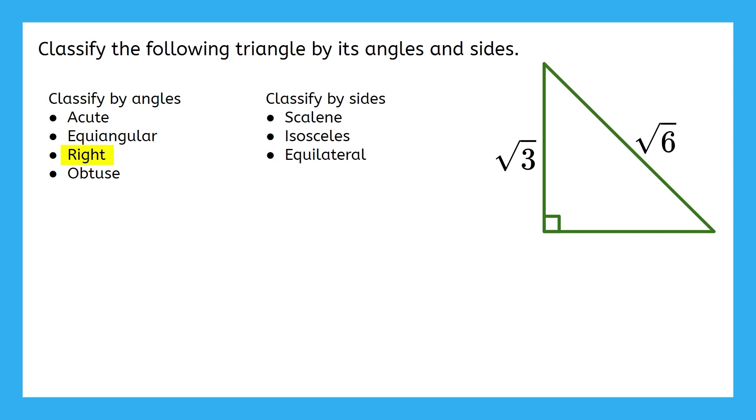The Pythagorean theorem! Using the Pythagorean theorem finds us the missing side. Then we can determine if this is a scalene, isosceles, or equilateral triangle. Pause the video now so you can work through this.